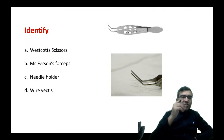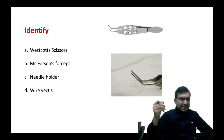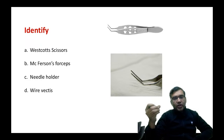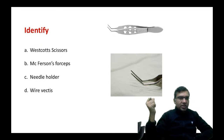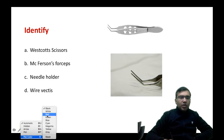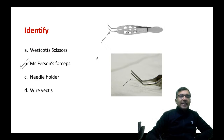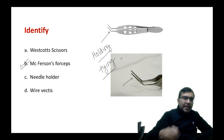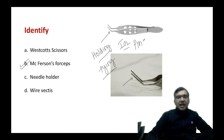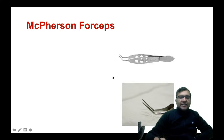The next instrument is McPherson's forceps. It has two prongs and can be used to hold or tie a suture. It can also be used to hold a PMMA intraocular lens — a hard, rigid IOL. See the ends of the McPherson's forceps carefully and do not confuse them with a scissor.